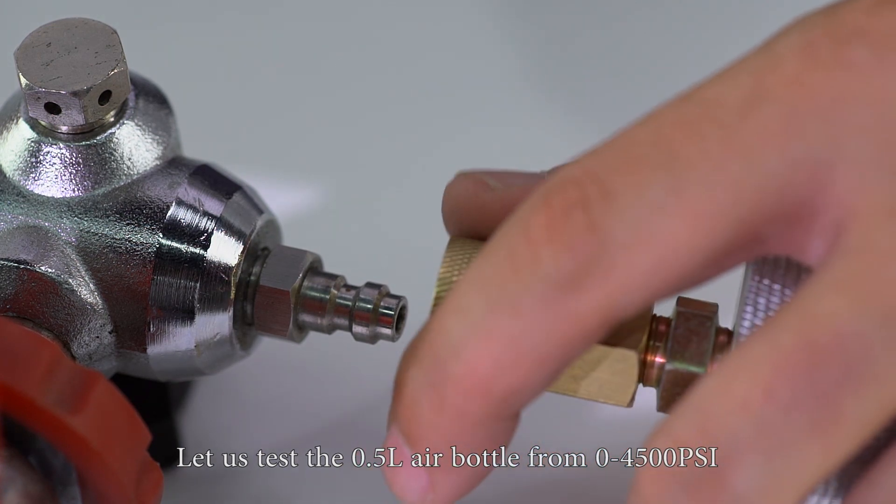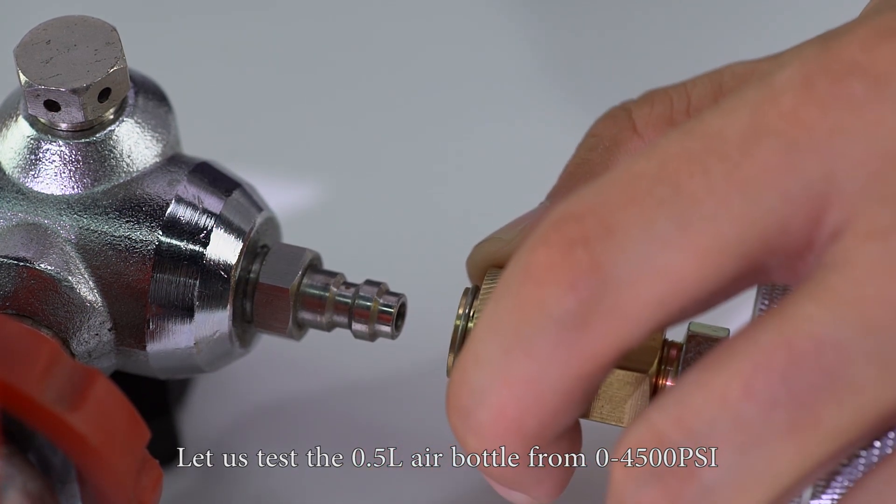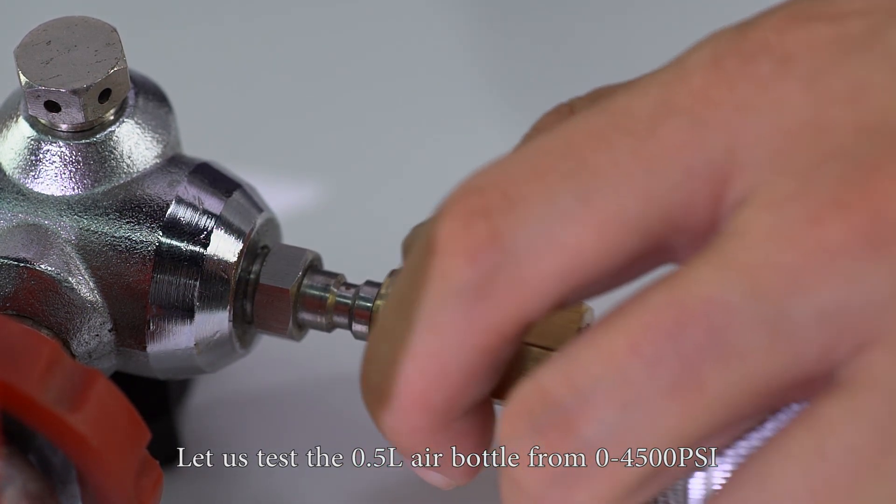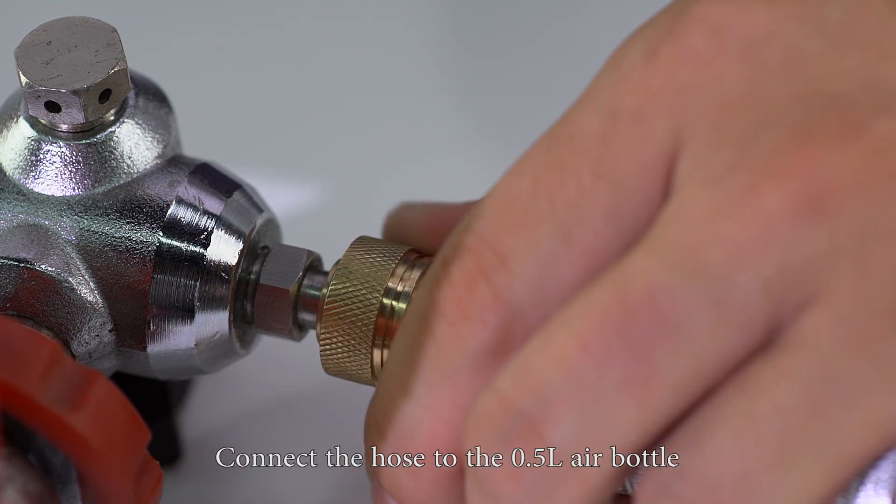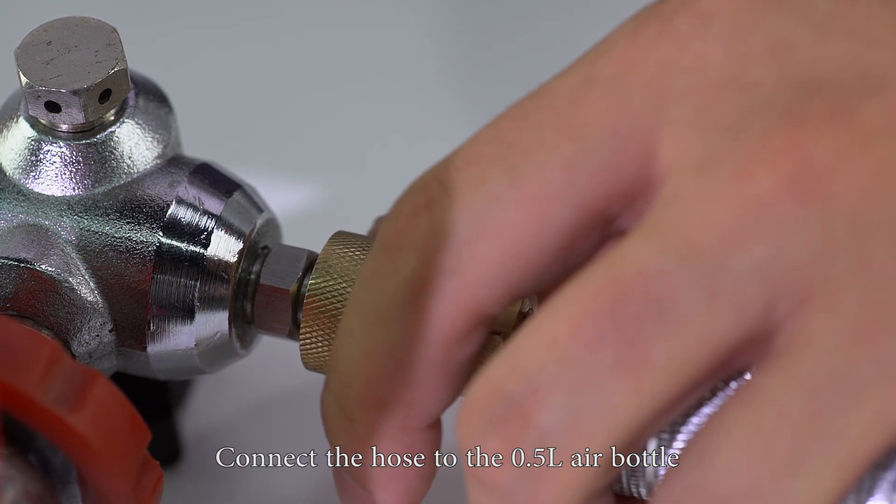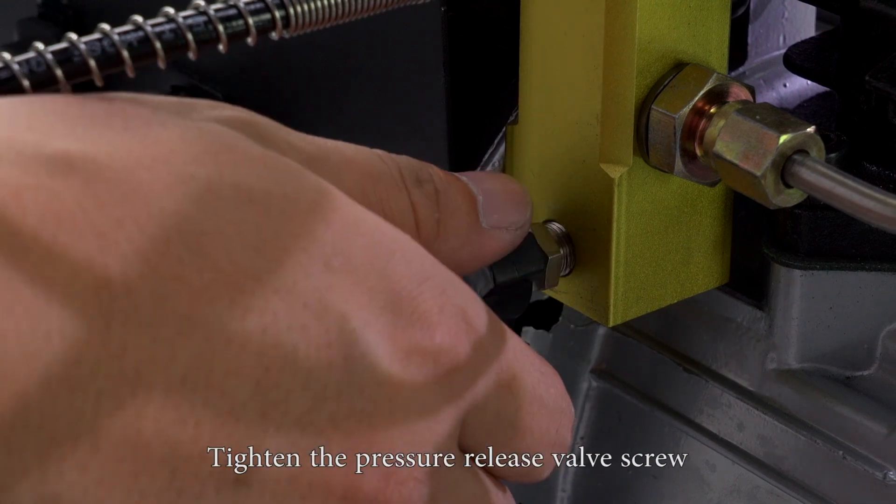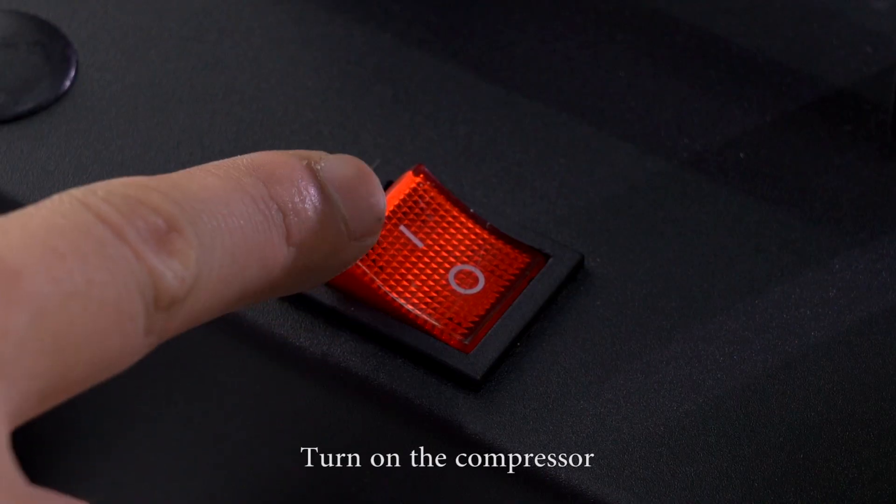Let us test the 0.5 liter air bottle from 0 to 4500 psi. Connect the hose to the 0.5 liter air bottle. Tighten the pressure release valve screw. Turn on the compressor.